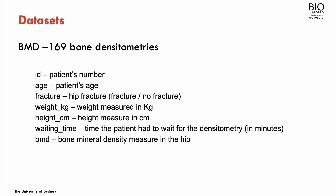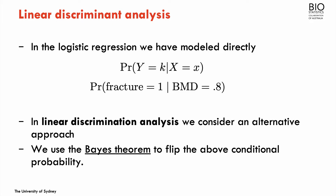In particular, we're going to look at bone mineral density as a predictor for fracture. We've seen before that in logistic regression, we model directly the probability of each category of the outcome based on a set of covariates. One of the examples we've seen was to model the probability of fracture given a value for the bone mineral density.